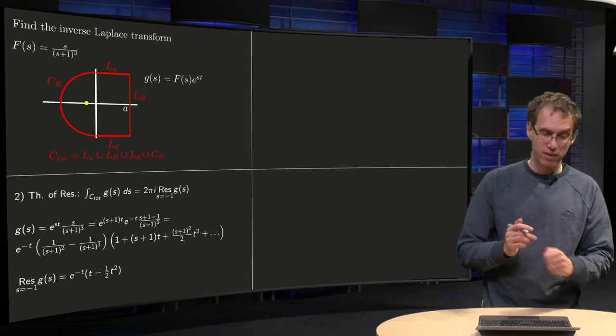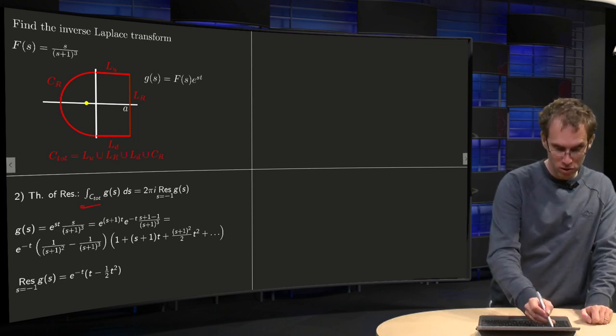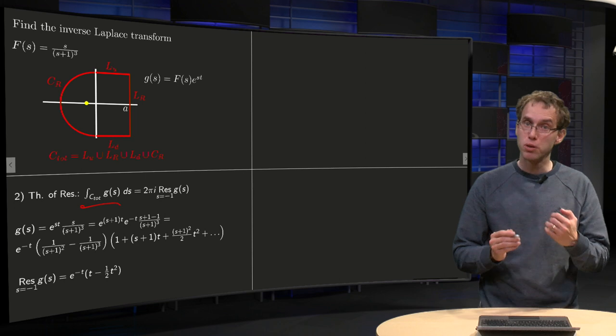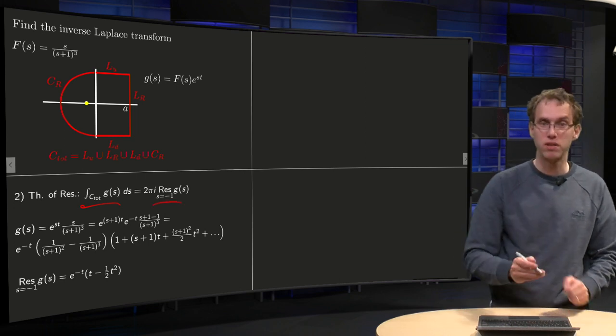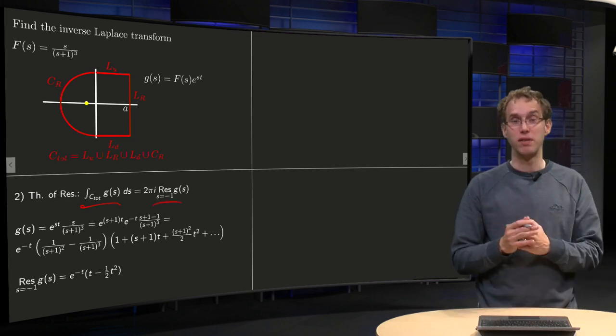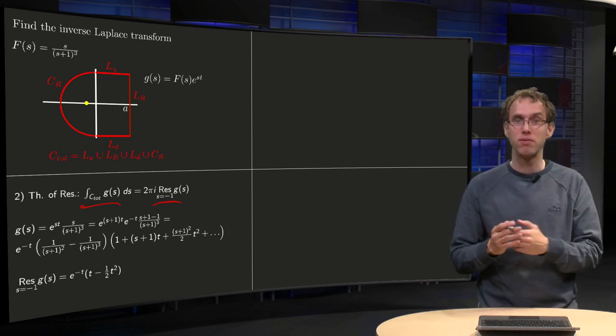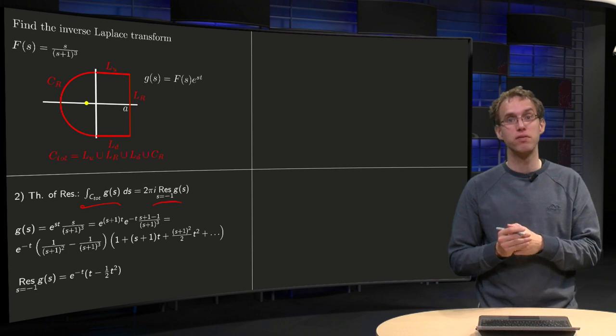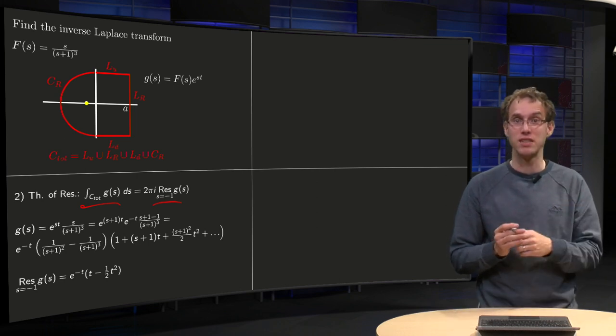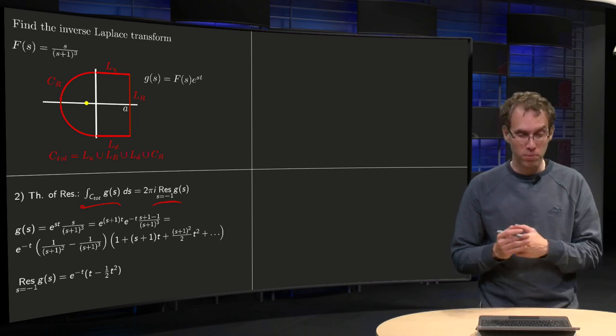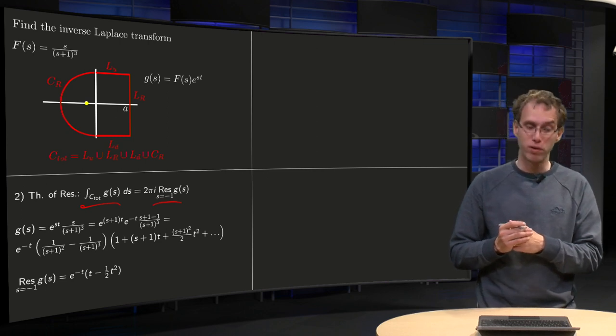Then we apply the theorem of residues. The integral along C total of G(s) dS equals 2πi times the residue at S equals minus one, because G of S is an analytic function, a quotient of two analytic functions except for the only point where you divide by zero, which is at S equals minus one, and at that point we have a pole of order three.